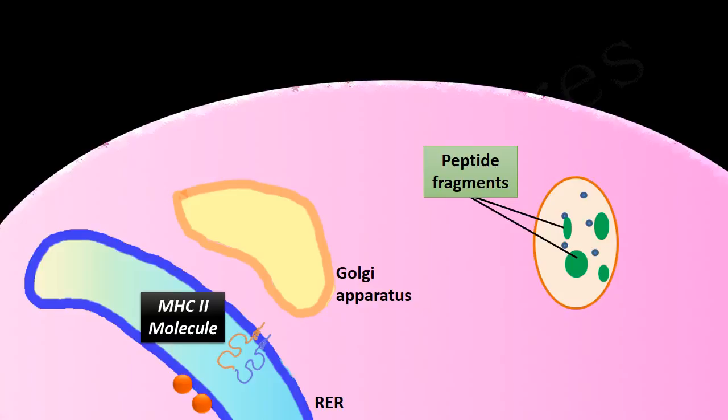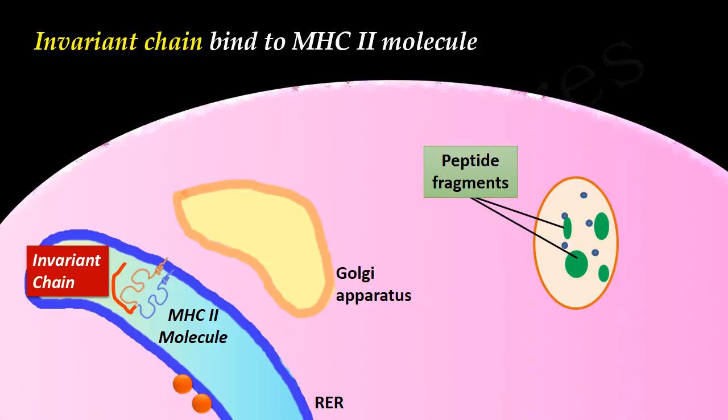MHC class II molecules are synthesized and assembled in the rough endoplasmic reticulum. Here, the alpha and beta chains of the molecules associate with a third protein chain called the invariant chain. This invariant chain binds to the groove of the MHC class II molecule. This binding stops self-peptides in the rough endoplasmic reticulum from binding to the MHC molecule.